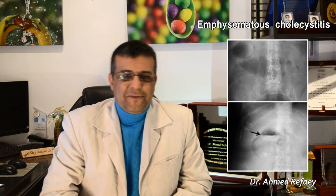Plain X-ray of the abdomen can also detect emphysematous cholecystitis in the form of a circular gas pattern in the area of the gallbladder, as seen in these images. However, CT is considered the most sensitive and specific imaging modality for the diagnosis of emphysematous cholecystitis, showing gas in the wall of the gallbladder, as demonstrated in these three images.